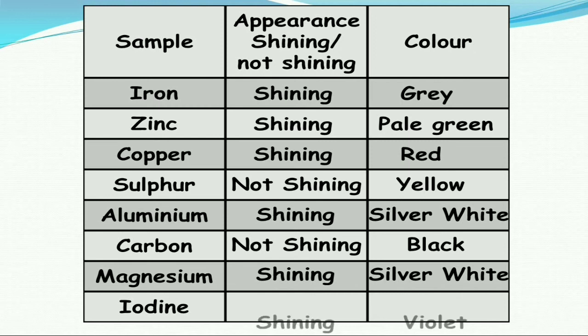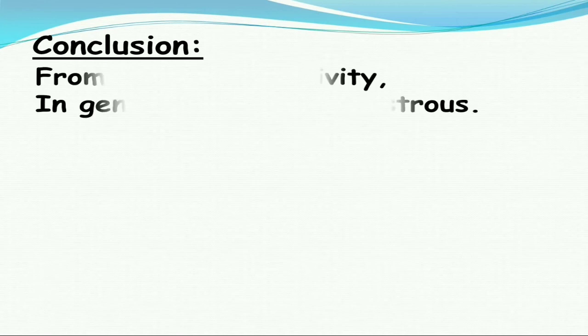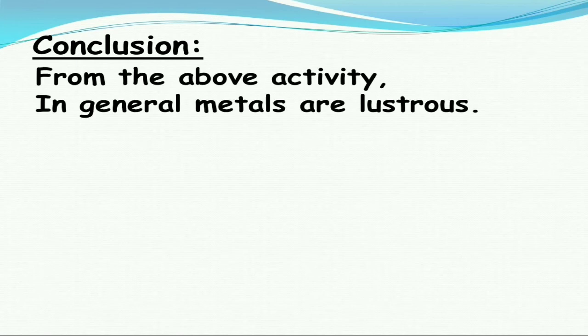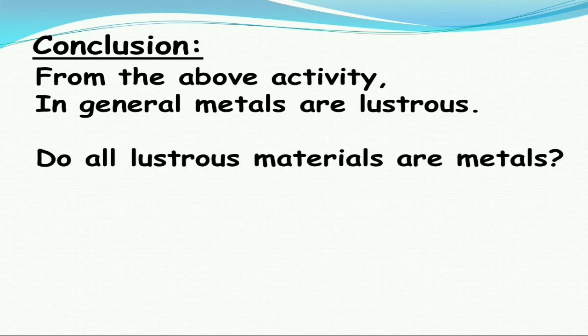From our observations, we conclude that iron, zinc, copper, aluminium, magnesium, and iodine are shiny in nature, while sulfur and carbon are not shining. The conclusion from this activity is that in general, metals are lustrous in nature. There are some exceptions — even iodine is a non-metal but it has a shiny surface.